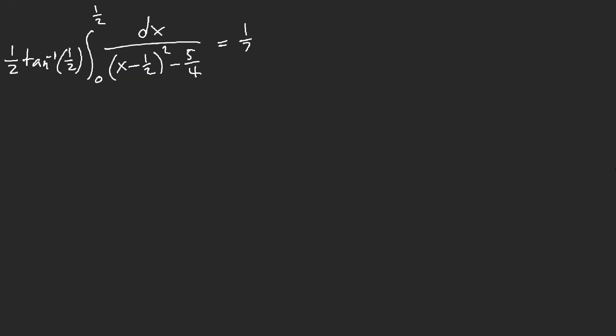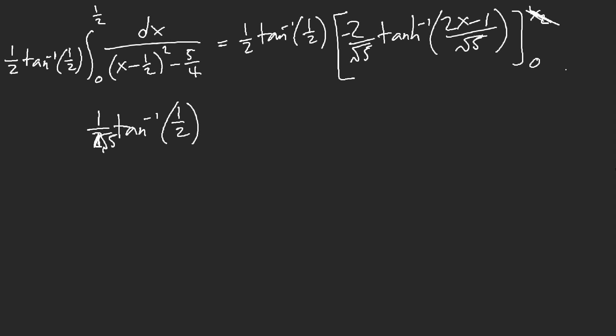Plus one minus. Sorry. Plus one fourth. Minus one fourth. We get minus five fourths. Ew. Yo. I thought this was an inverse tangent integral. But no. This is an inverse tanh. Let's get rid of this ugly mess first. Here. Inverse tangent of one half. And then here. I have two over root five. Negative. Inverse tanh. Of two x minus one over root five. From zero to a half.